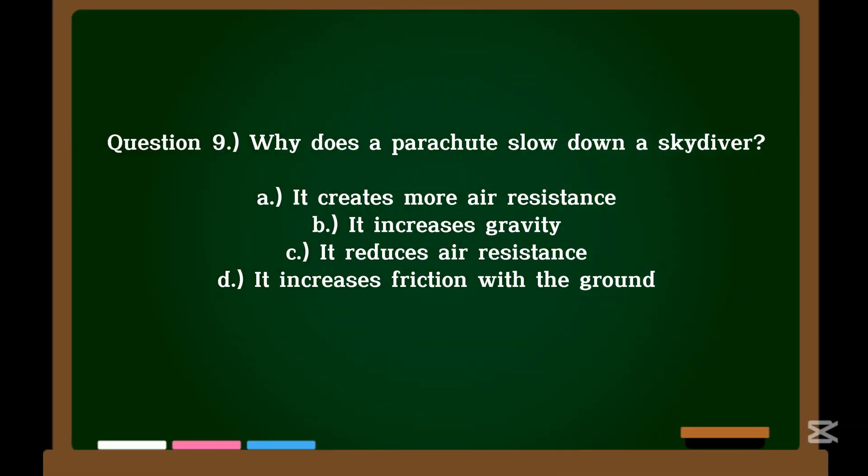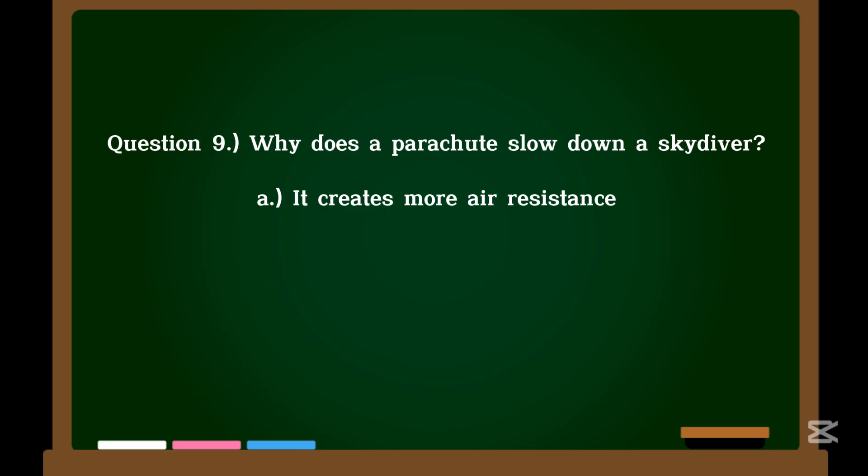Question 9. Why does a parachute slow down a skydiver? A. It creates more air resistance. B. It increases gravity. C. It reduces air resistance. D. It increases friction with the ground. Correct answer: A. It creates more air resistance.